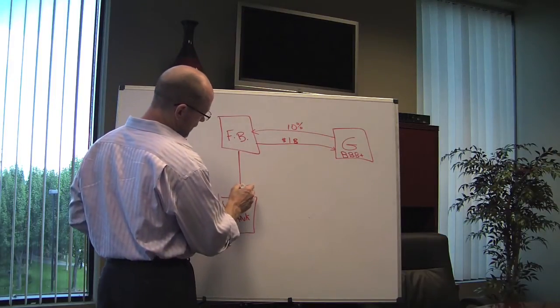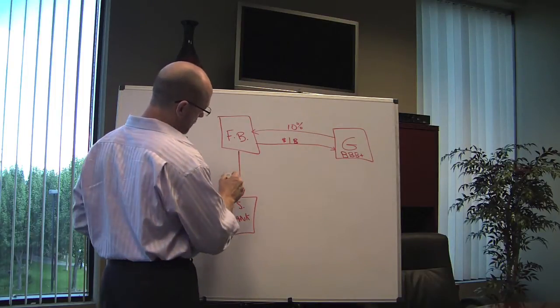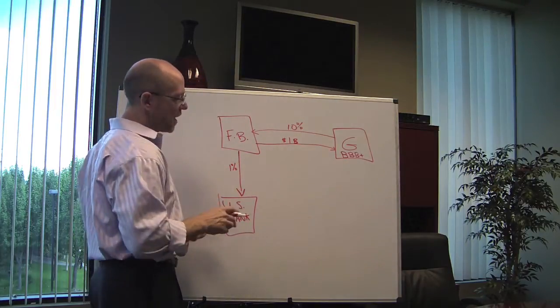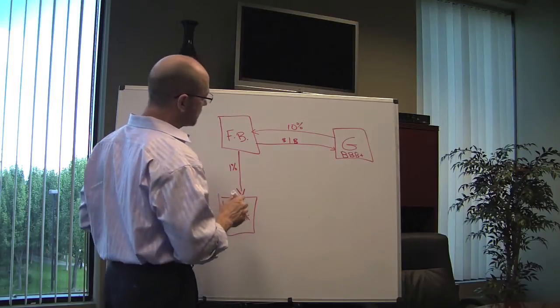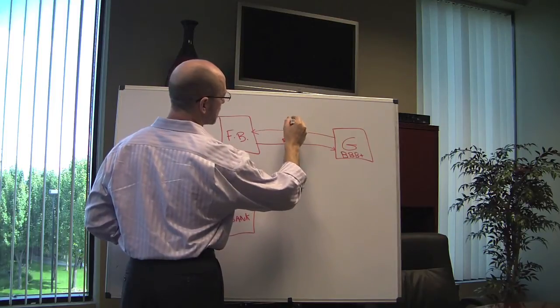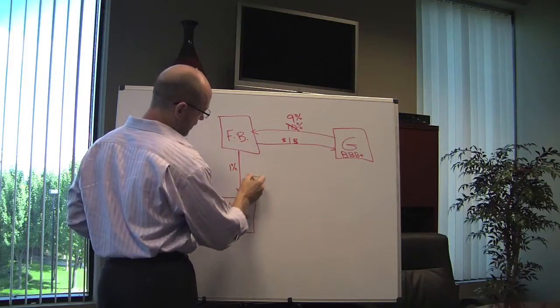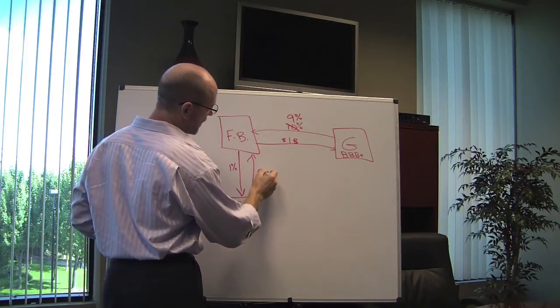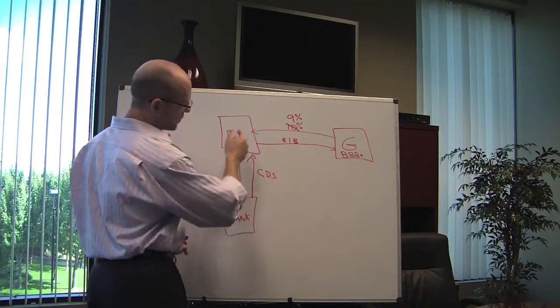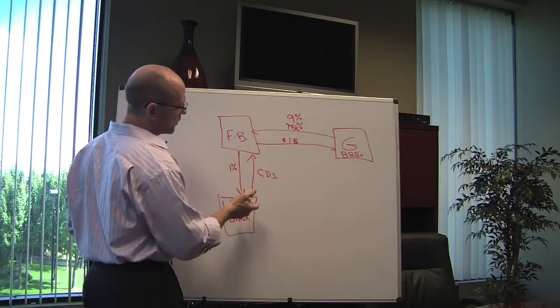The way it works is that bank gives a premium or pays a premium to US Bank. Let's just say 1%, 100 basis points on a billion dollars of Greek debt. So French bank says, let's net 9% and let's give them 1% and let's get a contract that says if Greece indeed does default on what they owe us, that US Bank will pay us our billion dollars. And folks, that's how it works. That's a credit default swap. It's an insurance policy.